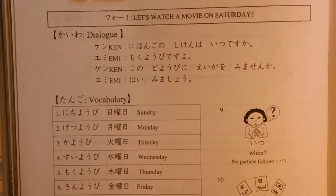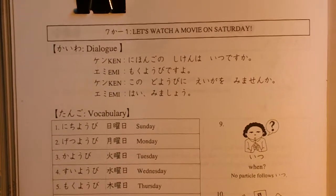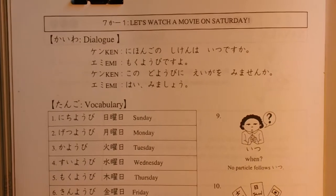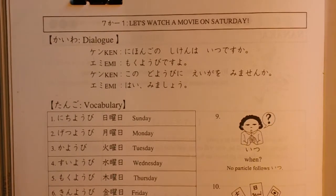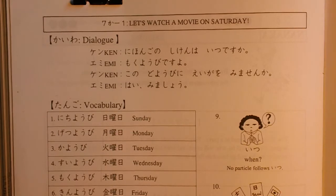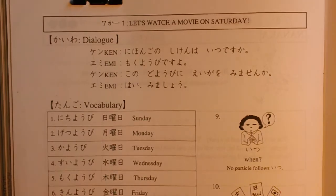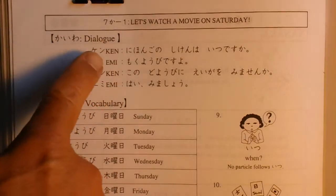Hello, Japanese One students. Today is May 4th. This is Chapter 7, Section 1. Do you remember the word いつ? いつ means 'when.' 今日はいつですか? When is today? So, let's check the dialogue.